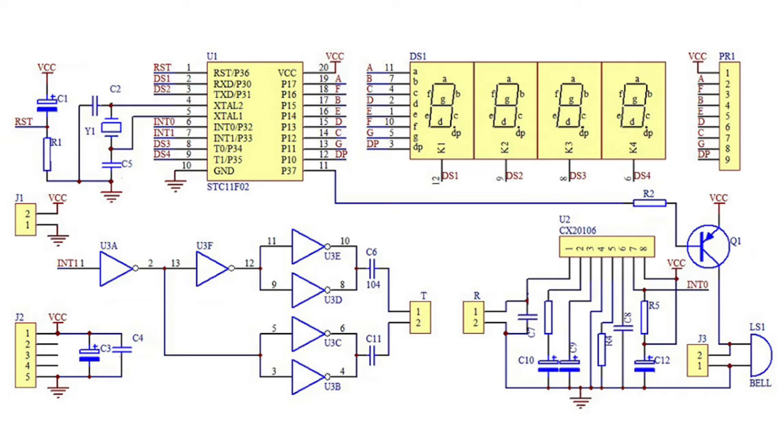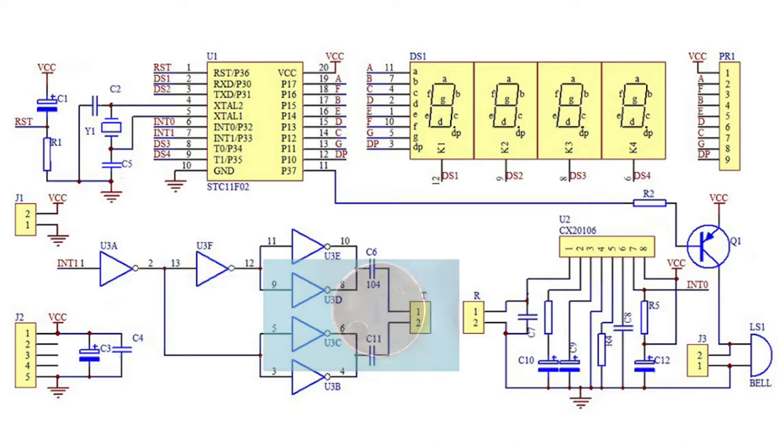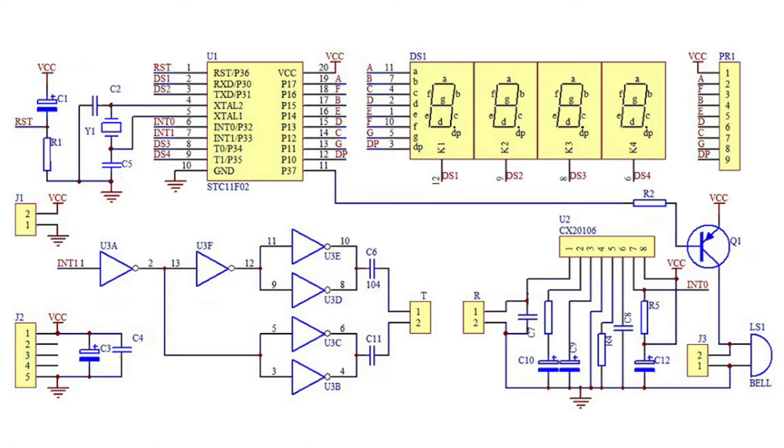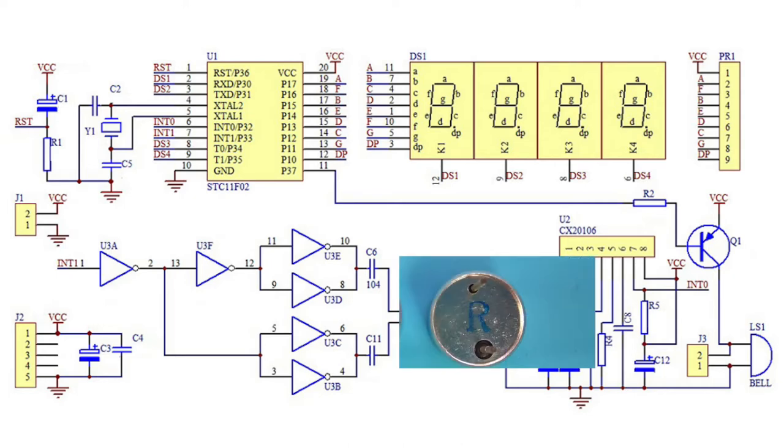INT1 pin generates the ultrasound pulse. U3 hex inverter buffers the signal and drives the ultrasound transmitter, labeled T. The U2 special Sony infrared detector IC is applied for filtering and processing the echoed 40 kHz ultrasound received by the ultrasound receiver, labeled R.